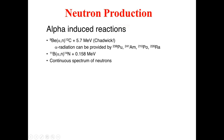For the bombardment of the beryllium nucleus, alpha radiations can be provided by plutonium-238, americium-241, polonium-210, and radium-226. These are the types of elements which can provide alpha radiations to be bombarded on the beryllium nucleus for the production of neutrons.